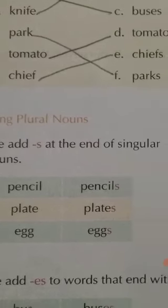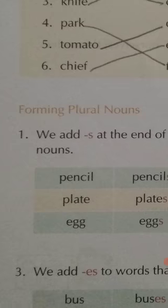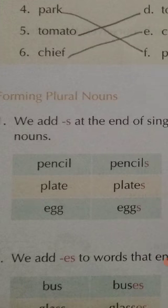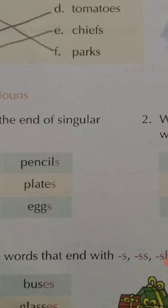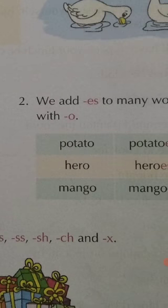The first rule: we add S to most nouns. For example, pencil–pencils, plate–plates, egg–eggs, bag–bags, ball–balls, bat–bats, book–books, door–doors. This is your first rule — simply add S to the word to make it plural.